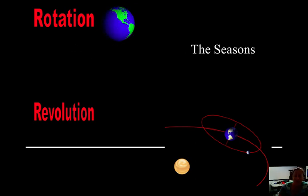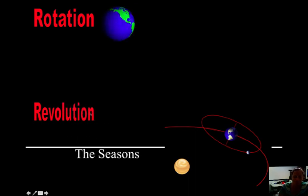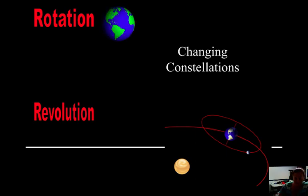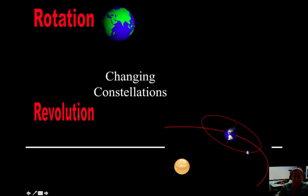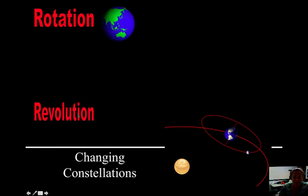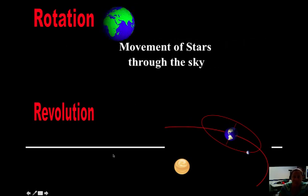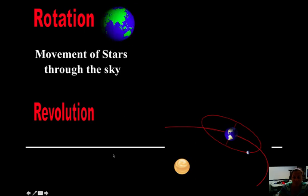The seasons. Is that something that happens in a day or the year? This would be revolution. Changing constellations. Do they change in a day or in the year? This goes with year, revolution. Movement of stars through the sky. Do they appear to move over the course of the day or the course of the year? This also is rotation over the course of the day.